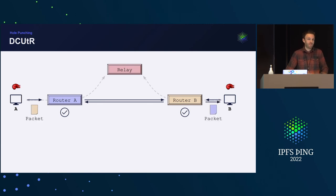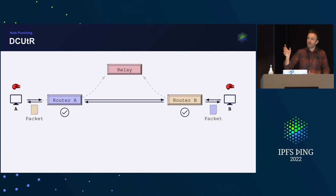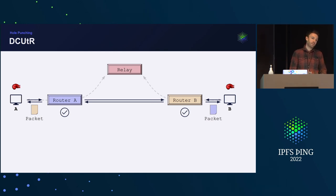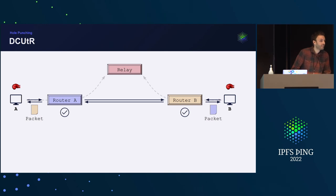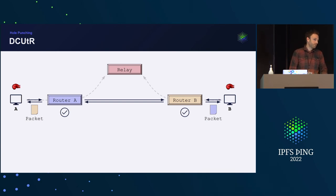Q&A: With Kubo 0.13, does both peers need to be on 0.13, or just the peer behind the NAT? Both parties need to support the /p2p/dcutr protocol. The relay also needs to support circuit v2, which was rolled out with 0.11 already, so that's been around for quite some time.